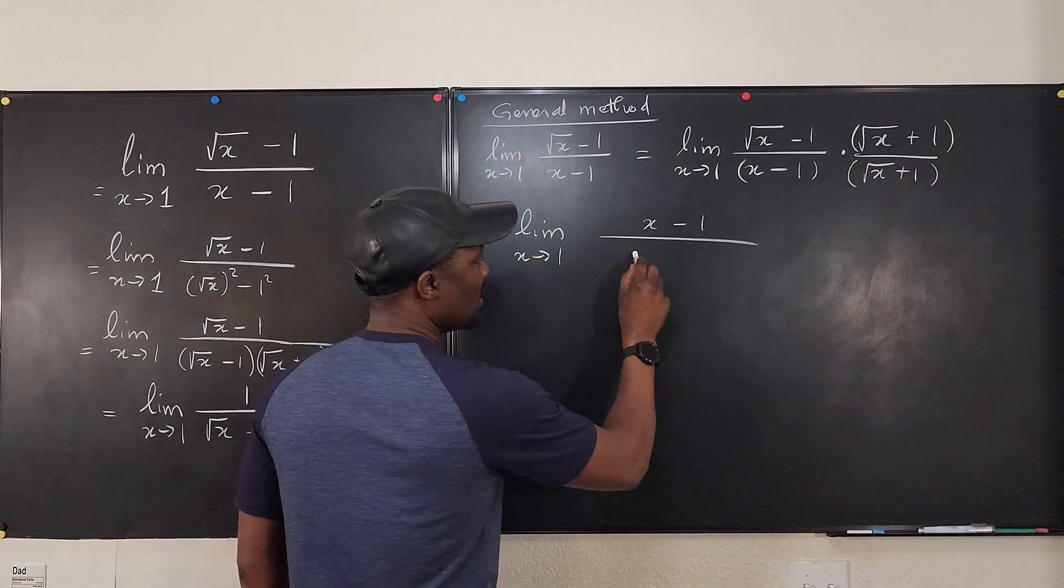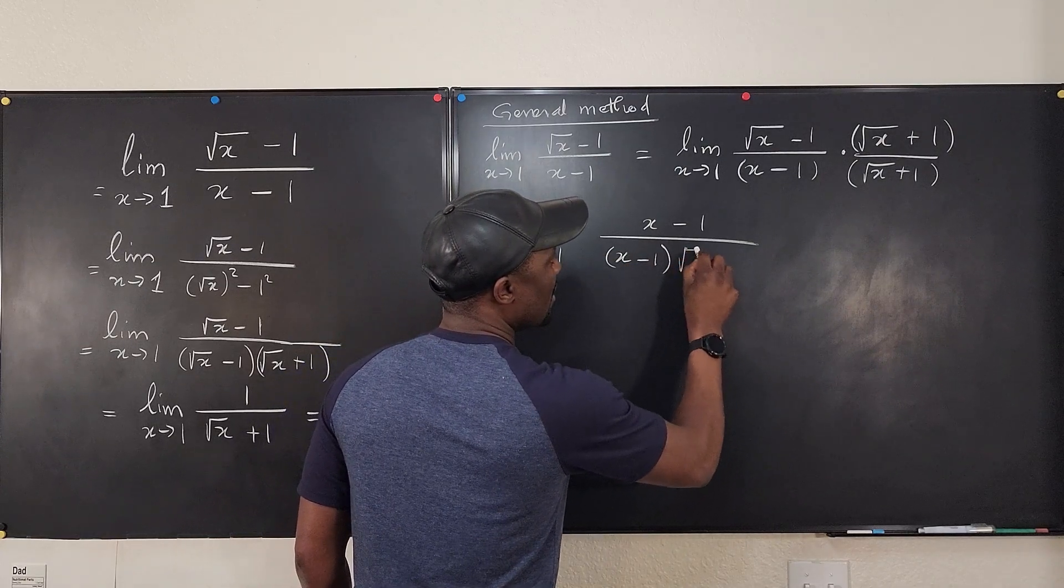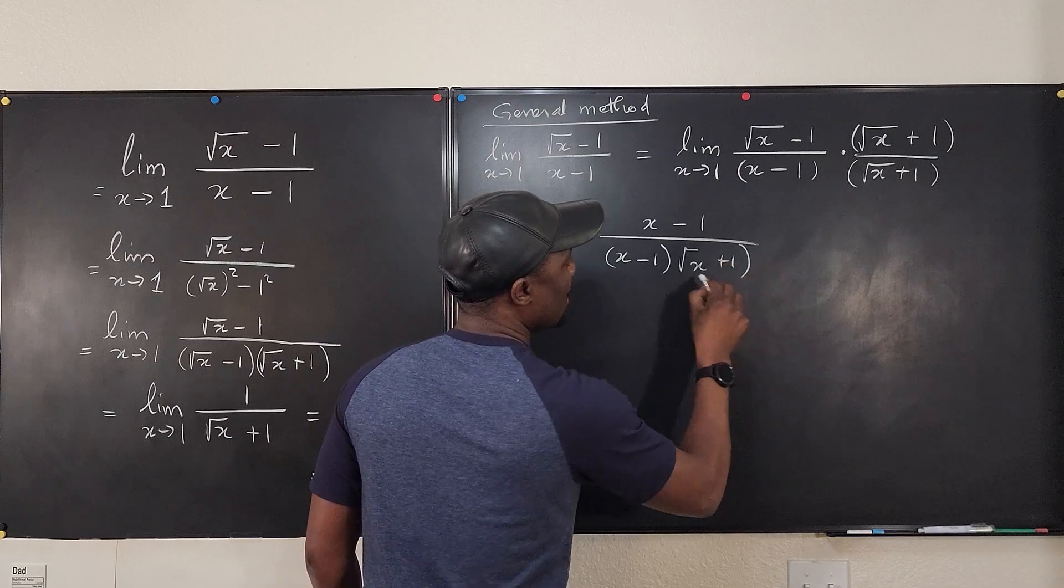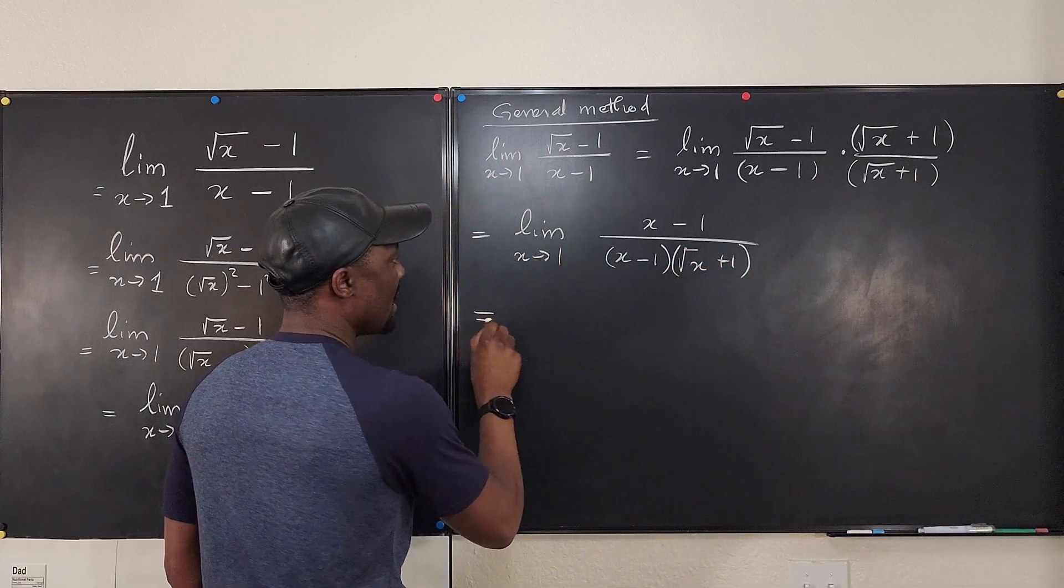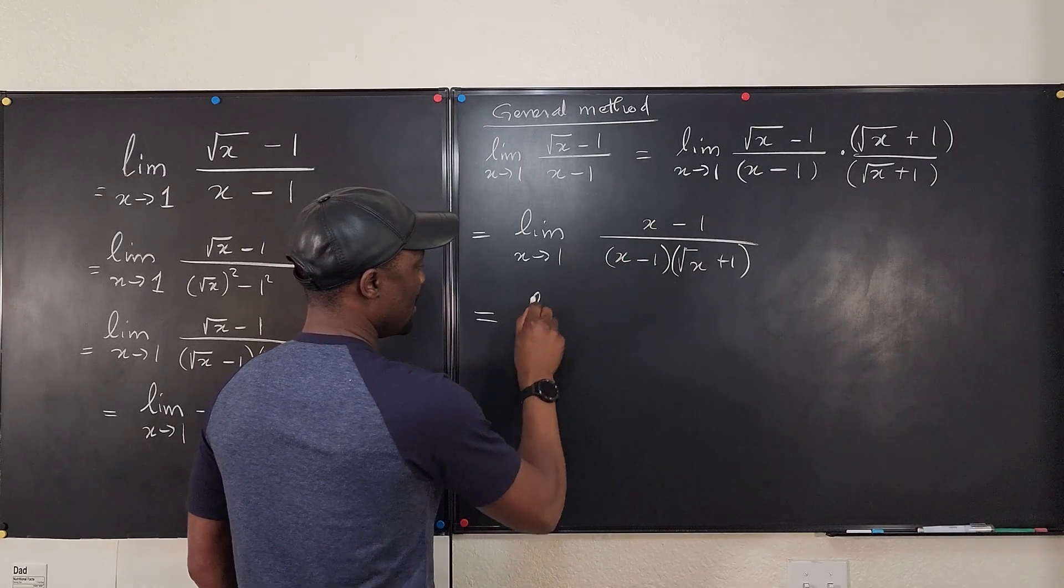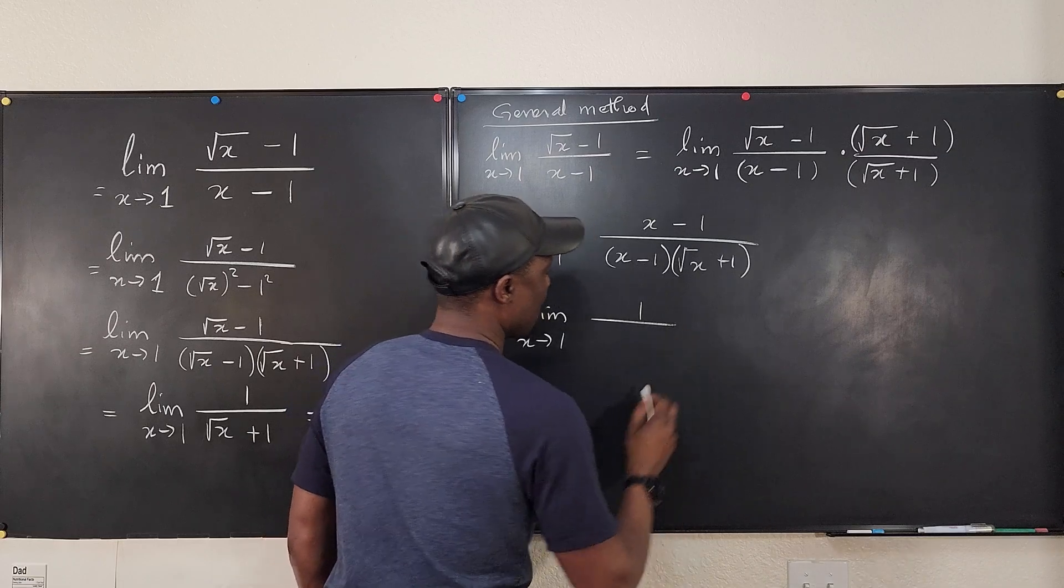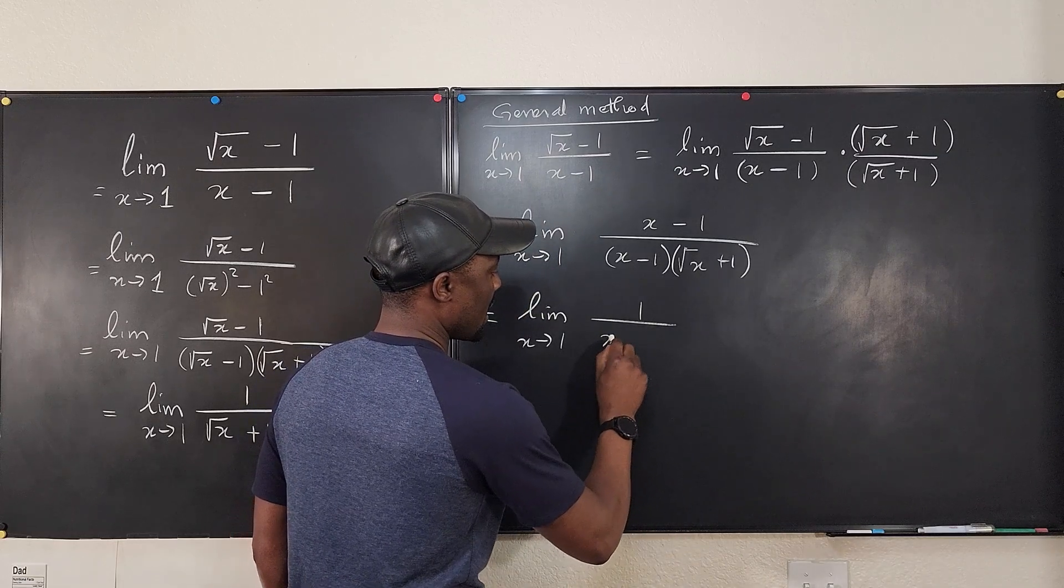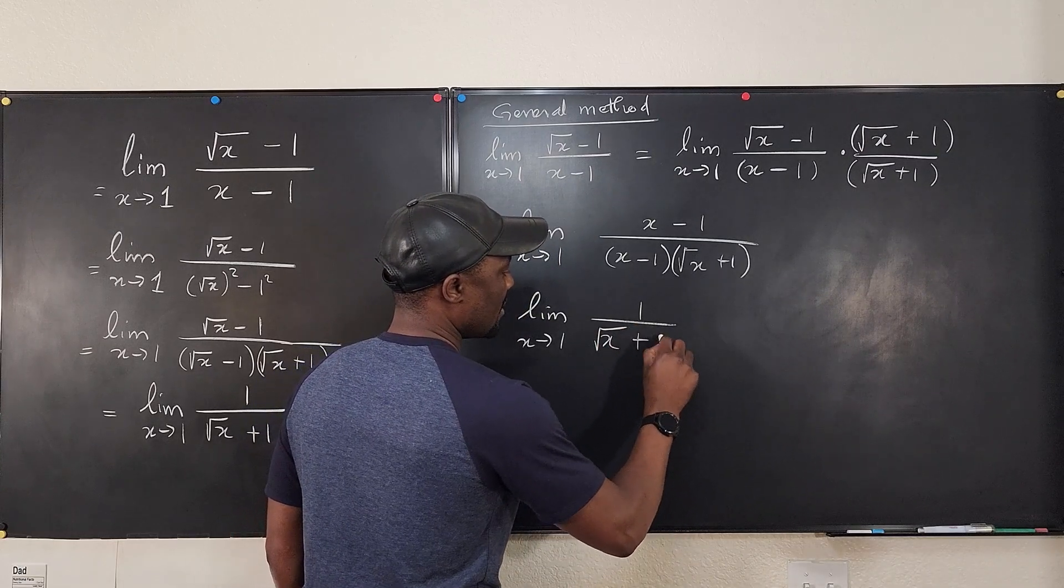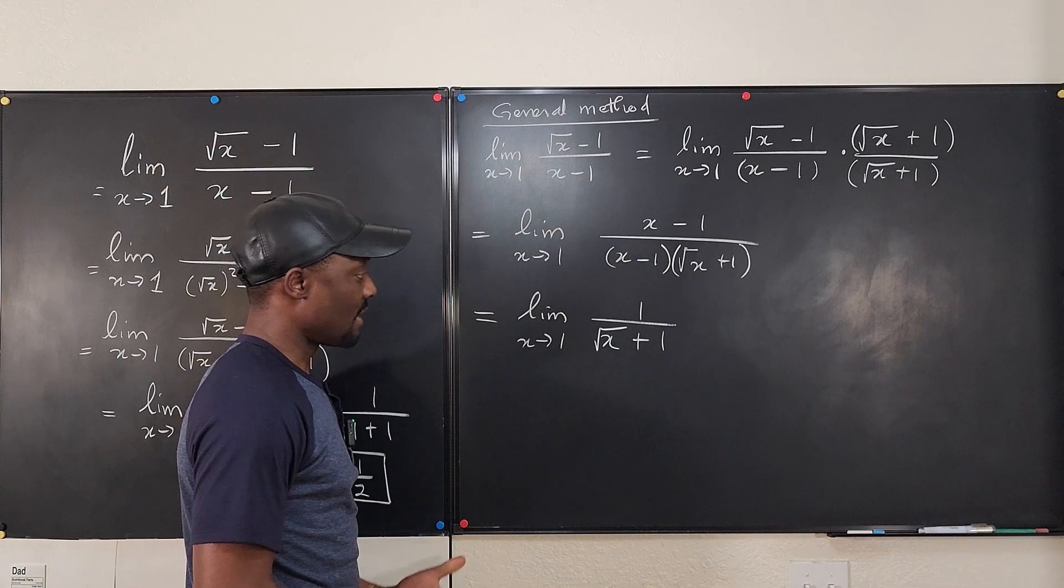when I'm doing this multiplication, we're going to have x minus 1 times the square root of x plus 1 in the denominator. And we know that this will cancel the top part. So we end up with the limit as x goes to 1 over square root of x plus 1.